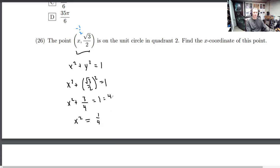1 is equal to 4 fourths. Subtracting 3 of them gives you 1 fourth left. Then we'll square root both sides.